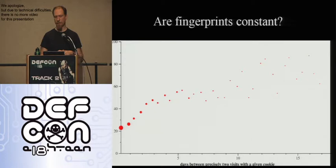Another really interesting question is: sure, you can identify people, but don't these fingerprints change over time? Are they really a stable way to track someone if they could upgrade their browser or install a new font, and suddenly the fingerprint would be different? So we decided to check this. This graph shows the set of people who visited Panopticlick exactly twice — we wanted to throw away people who might have been playing with the site or trying to optimize their uniqueness.